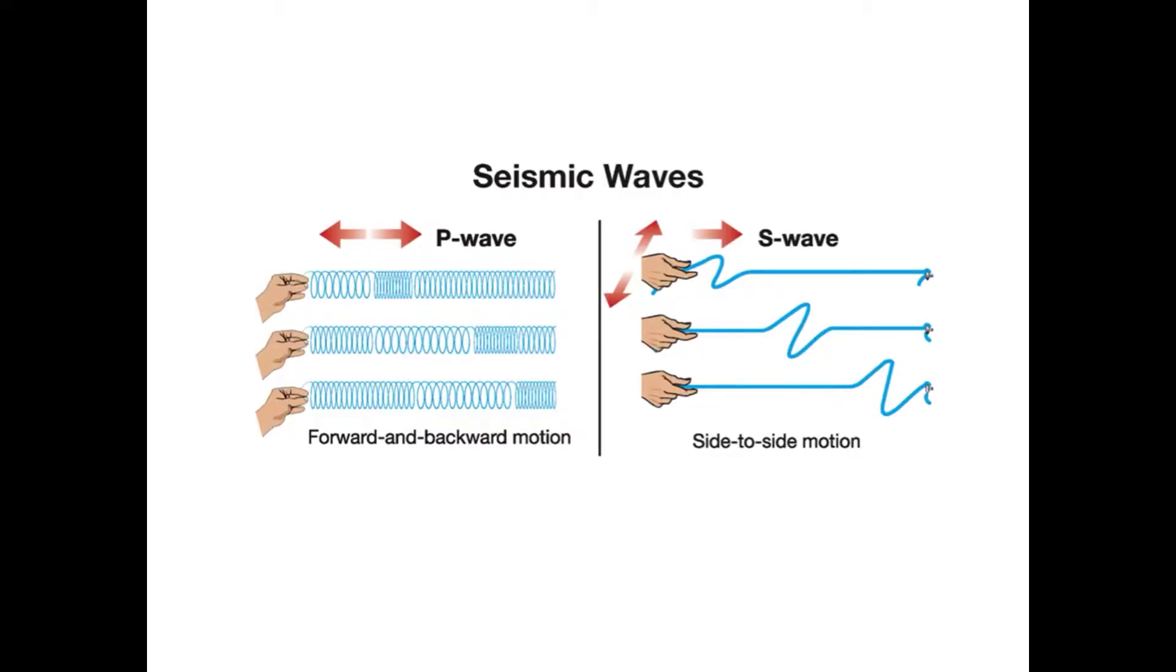These vibrations can be identified as P waves and S waves and arrive at receiving stations at different speeds. P waves are vibrations that move in a push-pull fashion, travel the fastest, and arrive first.